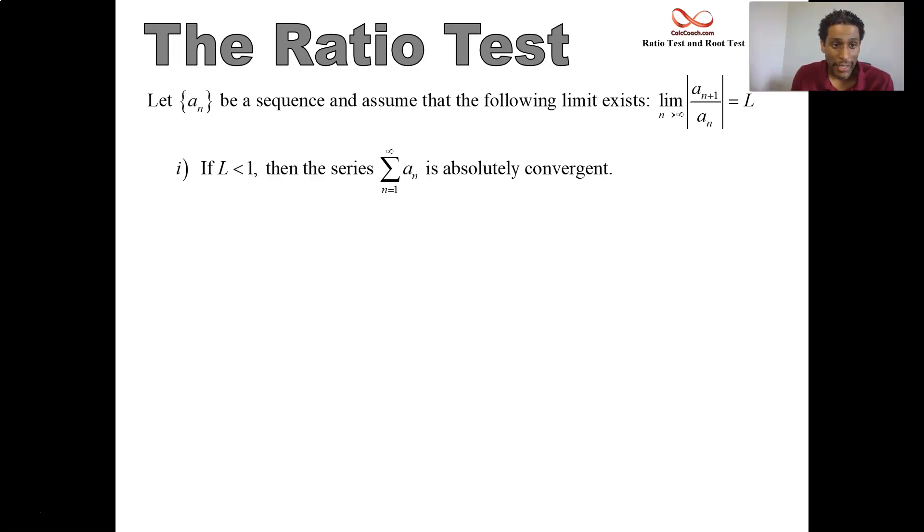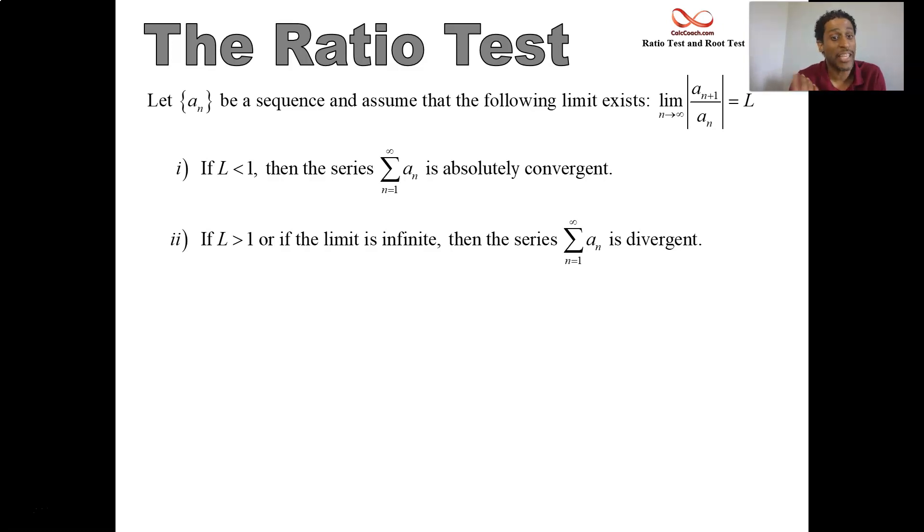If the limit is greater than 1, or if the limit is infinite, which I guess that counts as well as being greater than 1, the series is divergent. So we take care of less than 1, we take care of greater than 1. There's no way this limit could be negative with the absolute value bars in there. What happens when the limit is equal to 1? Unfortunately, we have no idea; we have to use another test. The test is inconclusive.